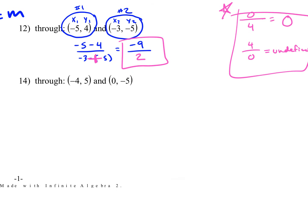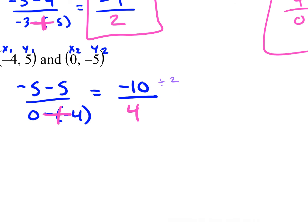Let's look at 14. So I have X1, Y1, X2, Y2. Negative 5 minus 5 over 0 minus negative 4. What's negative 5 minus 5? Negative 10 — they're both negative so you add them. And then what happens when I have minus a negative? It becomes a plus. So what's 0 plus 4? 4. Can I simplify negative 10 over 4? Yes — 2 goes into both. What's negative 10 divided by 2? Negative 5. And 4 divided by 2 is 2. So my answer is negative 5 over 2.